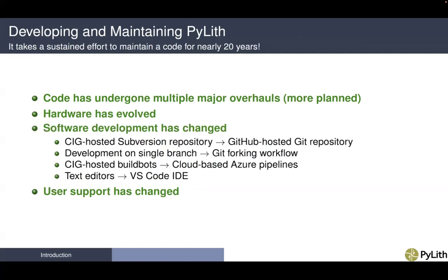Software development has also changed. When CIG started, it hosted its own subversion repository. Now we use cloud-based GitHub repositories that are accessed via Git. We did primarily development on a single branch. Now we use a Git forking workflow that is much more flexible and easy to manage multiple developers. When we started, there were very few centralized systems for automated testing, so CIG hosted their own system. Now we use the cloud-based Azure pipelines with automated testing workflows in the cloud. We were doing most of our text editing of the code using just simple text editors like Emacs. Now we use integrated development environments such as VS Code.